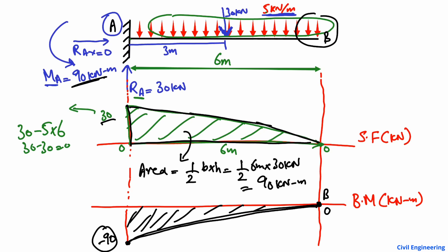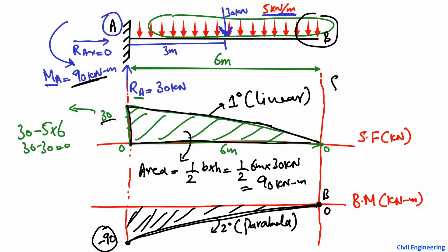Keep in mind: if the shear force diagram is a first-degree linear line, then the bending moment diagram will be a second-degree parabolic line. In this case, the shear force is linear so the bending moment is a parabola. The bending moment is always one degree greater than the shear force diagram. Hope you guys understand — don't forget to subscribe our channel. Thank you for watching.